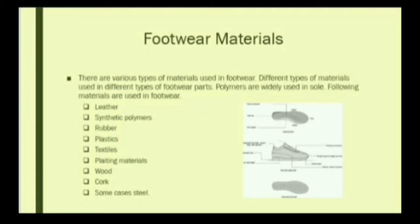What are the basics of manufacturing footwear? There are various materials used in footwear. For example, leather is used for the upper part of the foot, and synthetic polymers involve the chemistry of footwear. Rubber, plastic, and textiles are also used in chemical industries, along with plating materials, wood, cork, and in some cases steel.